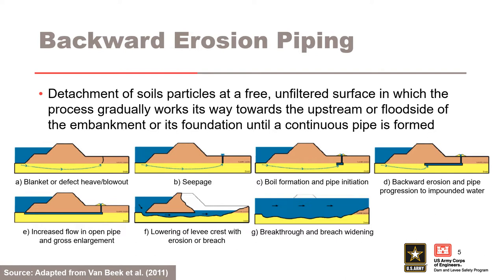In this series of graphics, the failure mode is depicted to first initiate due to heave of a clay blanket at A, causing seepage from the sand substratum at B. Flowing water in the sand substratum can cause migration of sand particles, causing it to boil out of the ground, which can result in formation of a void or pipe at C. If a pipe forms and progresses through the sand substratum to the river or reservoir and continues to enlarge at D, it can eventually cause collapse of the overlying embankment and breach, as shown in E through G.